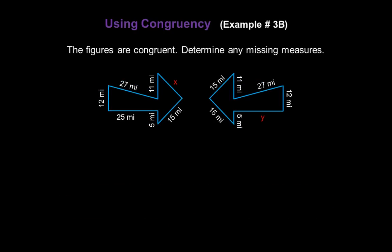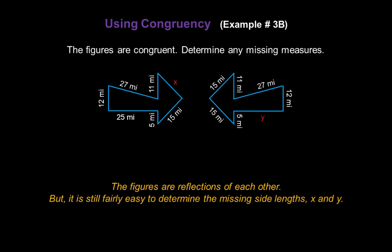These figures are congruent as well. Let's determine any missing measures. The figures are reflections of each other, but it's still fairly easy to determine the missing side lengths x and y.